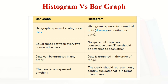Coming back to the histogram: a histogram is similar to a bar graph, but there are key differences. A bar graph represents categorical data, while a histogram represents numerical data — either discrete or continuous. In a bar graph there is equal space between every two consecutive bars, whereas in a histogram there is no space between bars — they are attached to each other. In a bar graph, data can be arranged in any order, but in a histogram data is arranged by range (e.g., 20,000 to 40,000, then 40,000 to 60,000). The x-axis in a histogram must represent only continuous numerical data.